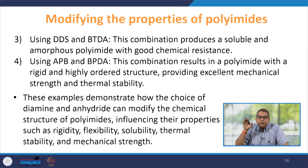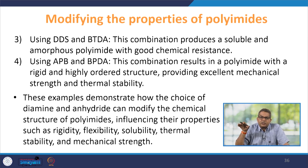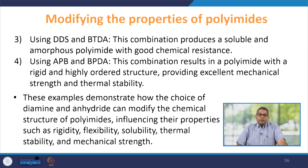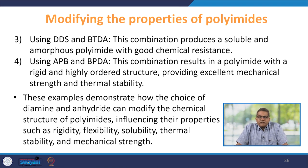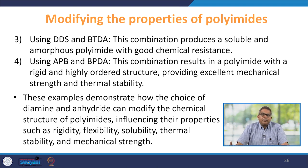Anhydrides with bulky substituents like benzophenonetetracarboxylic dianhydride (BTDA) can affect packing and crystallinity. Combining ODA with PMDA yields a highly rigid and thermally stable structure suitable for high-temperature applications. HMDA with PMDA leads to flexible and transparent polyimides with improved mechanical properties. DDS with BTDA produces soluble and amorphous polyimides with good chemical resistance. APB with BPDA may result in polyimides with a rigid, highly ordered structure providing excellent mechanical strength and thermal stability.